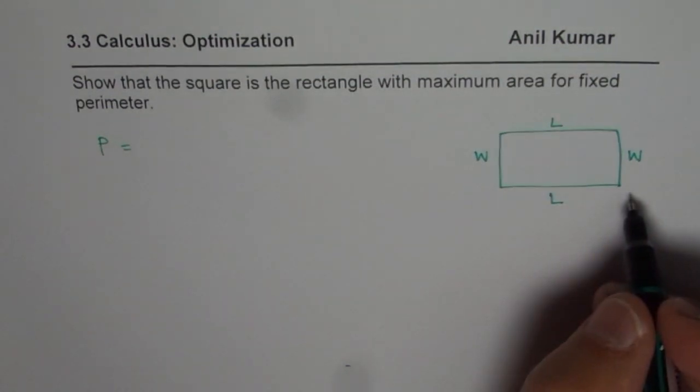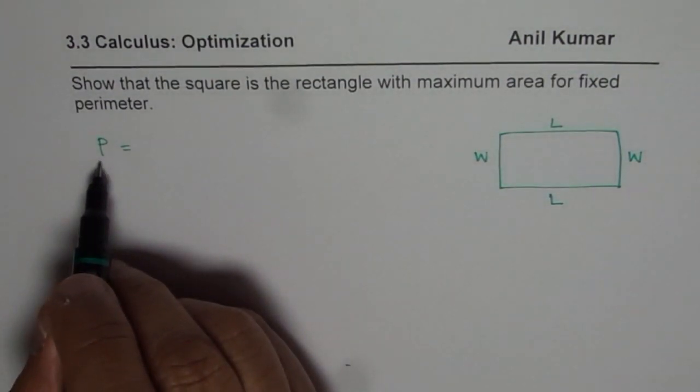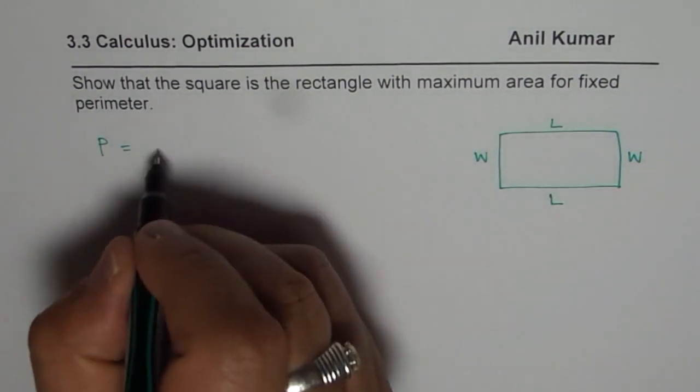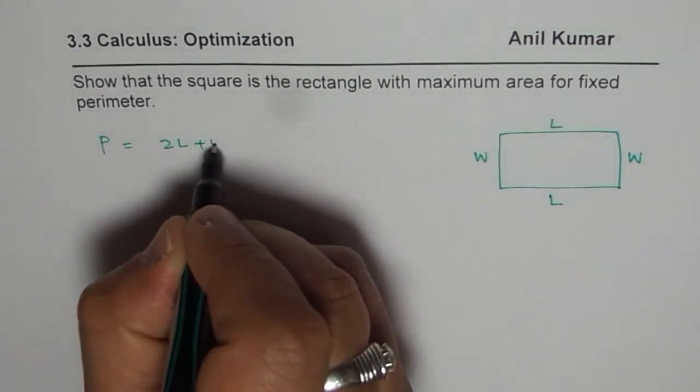Let us say we have a rectangle in general. So when we say perimeter is fixed, that means constant, then it equals 2 length plus 2 width.